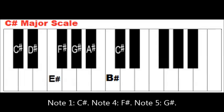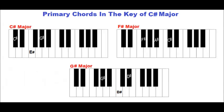Notes 1, 4, and 5 are C-sharp, F-sharp, and G-sharp. Therefore, the primary chords in the key of C-sharp major are C-sharp major, F-sharp major, and G-sharp major.